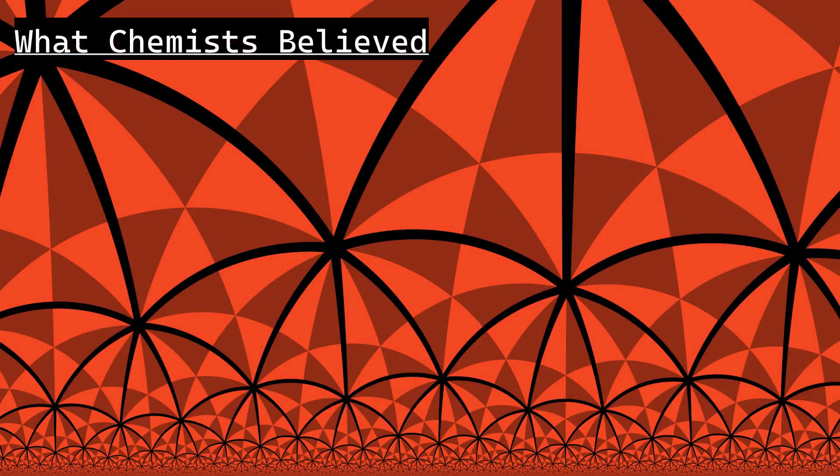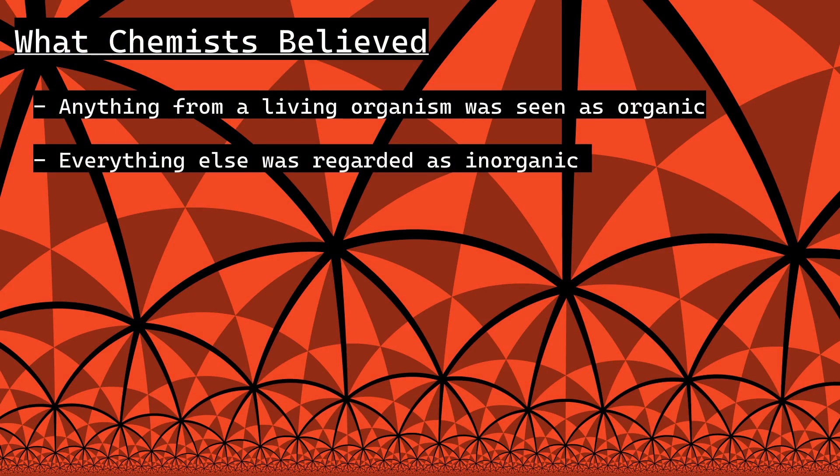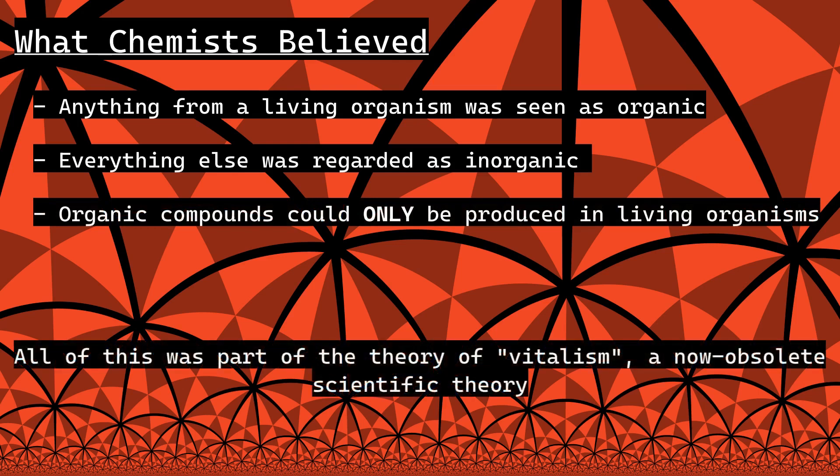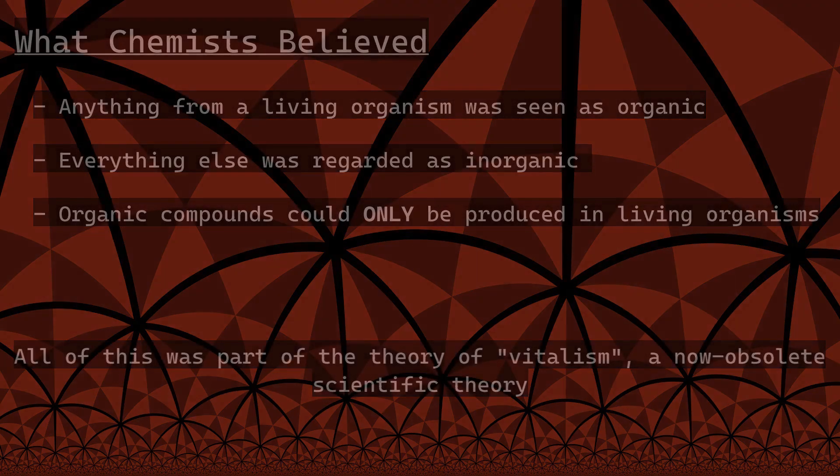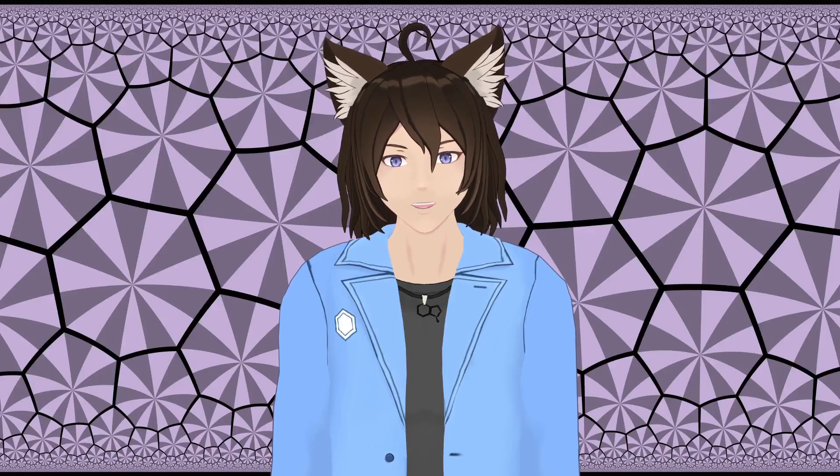Early chemists regarded compounds which could be isolated from or produced by living organisms as organic, and all other compounds as inorganic. They also believed that organic compounds could only be produced by living organisms. This was part of the theory of vitalism, a now-obsolete scientific theory which persisted until the 19th century. It stated that living organisms possessed a certain special life force which enabled them to produce organic molecules, such as urea.